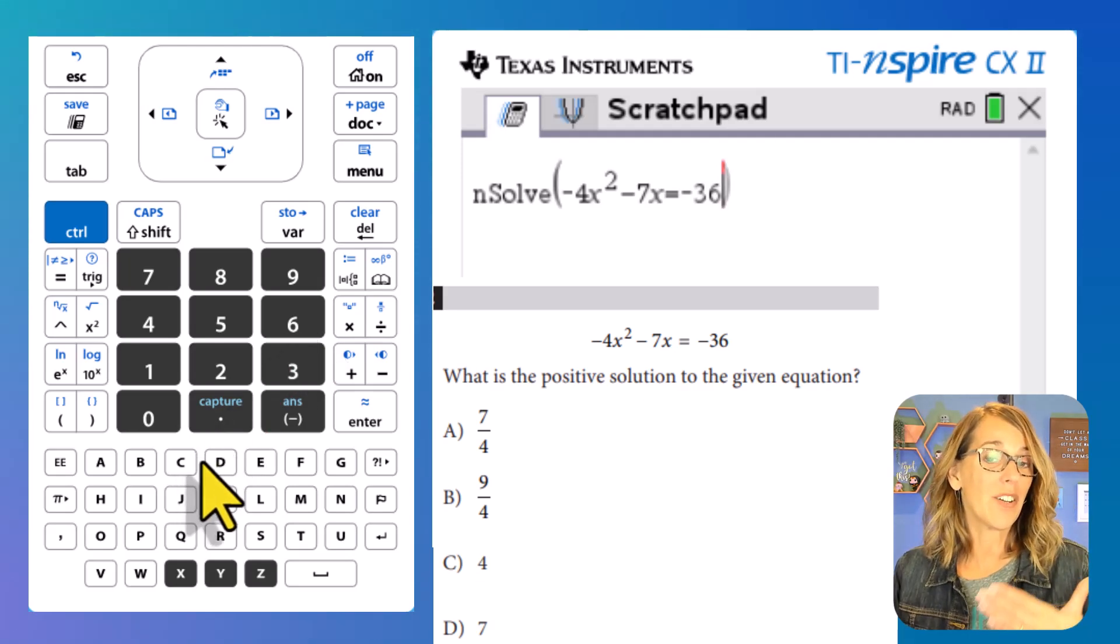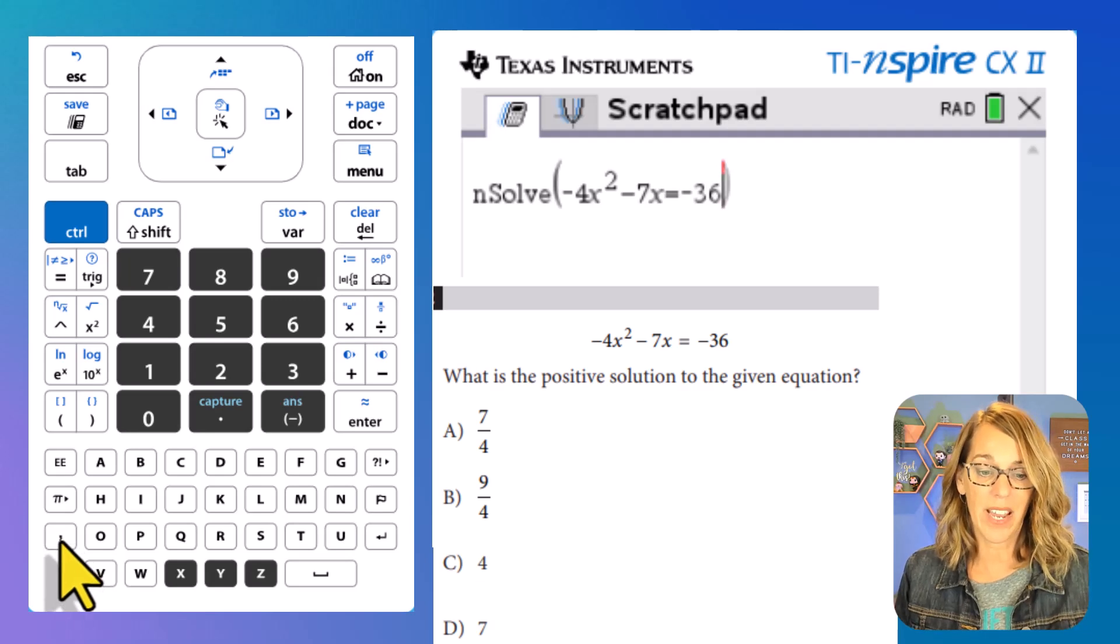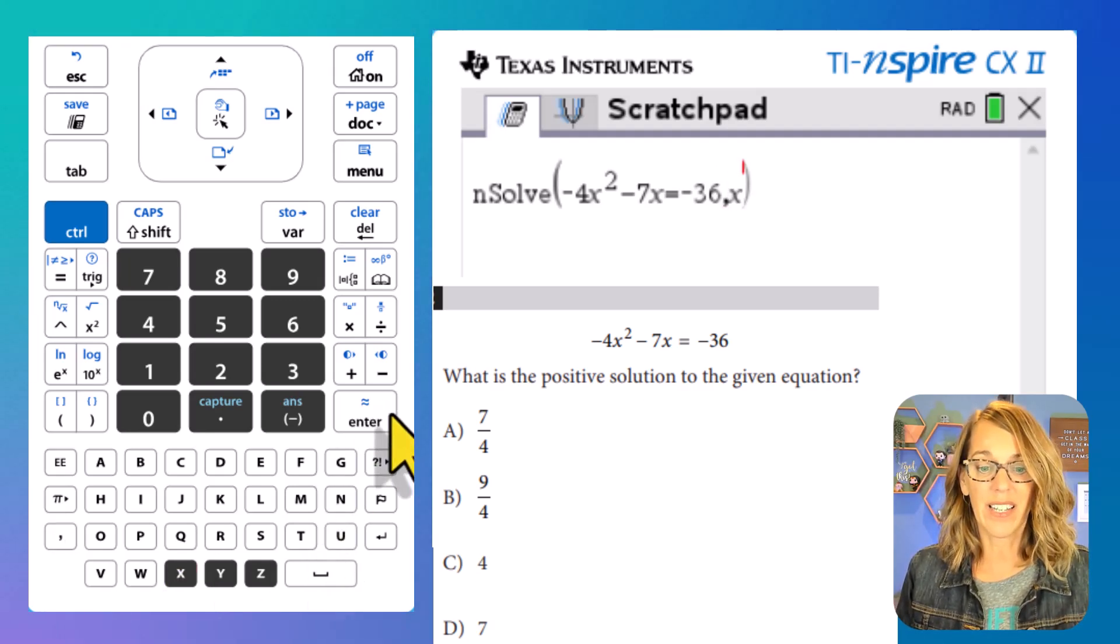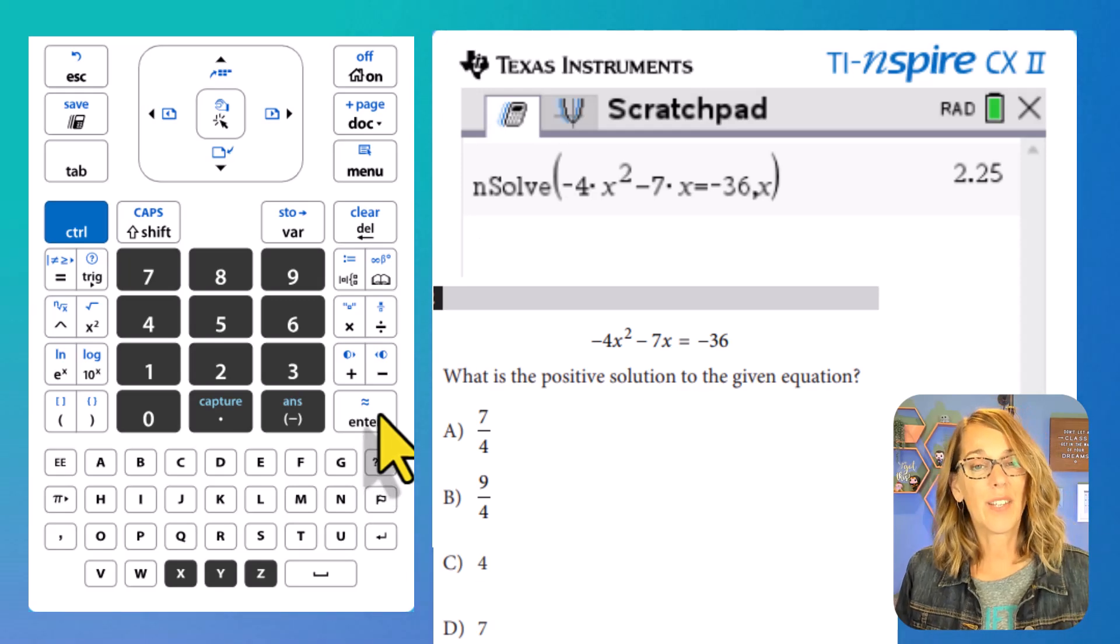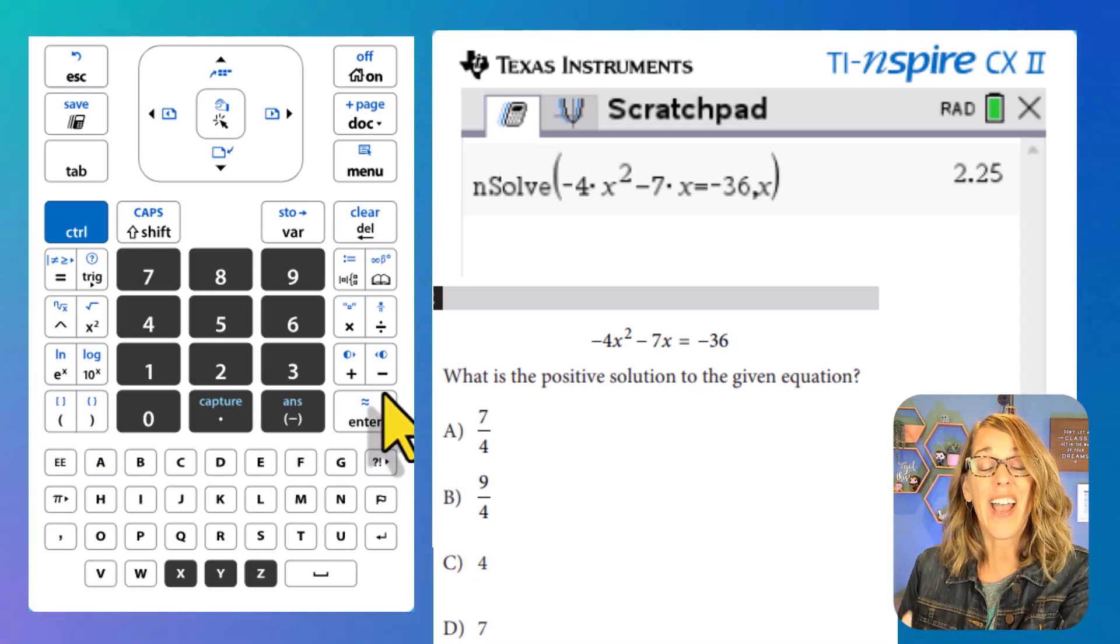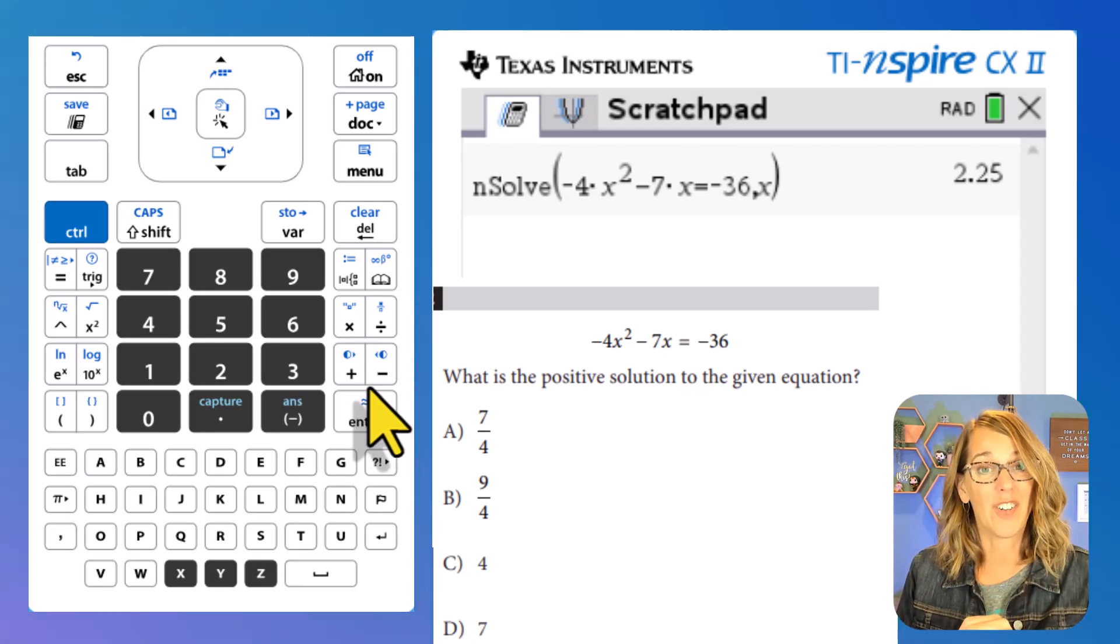But I need to tell the calculator what variable I'm solving for. So I need to put a comma in, which is down here below the pi symbol. So comma, and then my variable x. Let's go ahead and hit enter. And it says that my solution is 2.25, which is great, but I don't have a decimal answer in my choices. So let's convert this to a fraction.